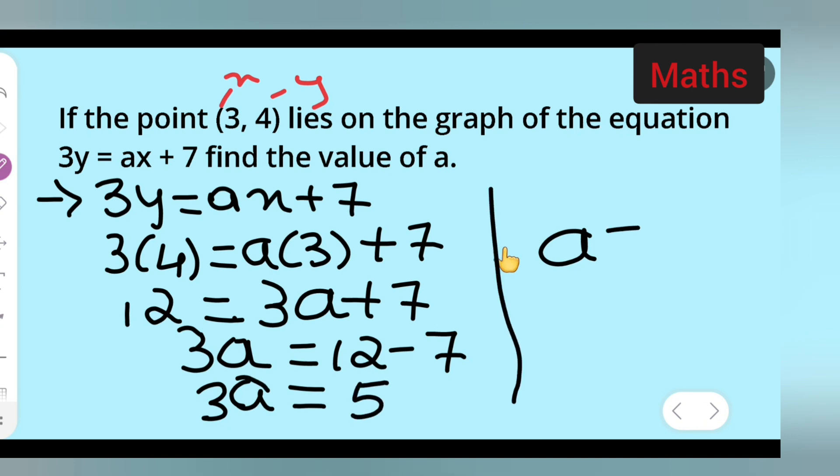So finally we found out the value of a. The value of a is nothing but 5 upon 3. So I hope you have understood exercise 4.3 question number 3, and thanks for watching.